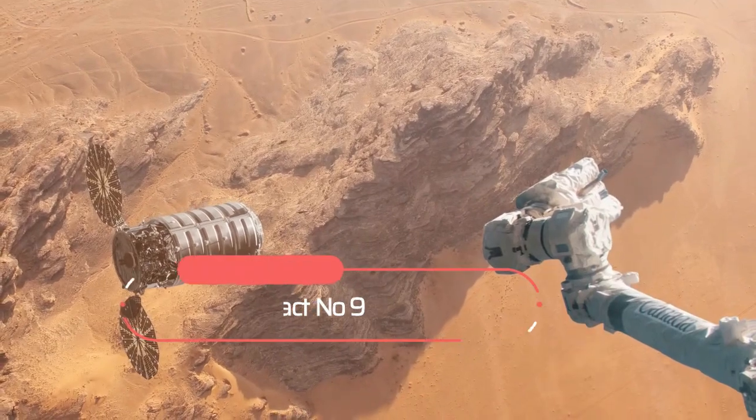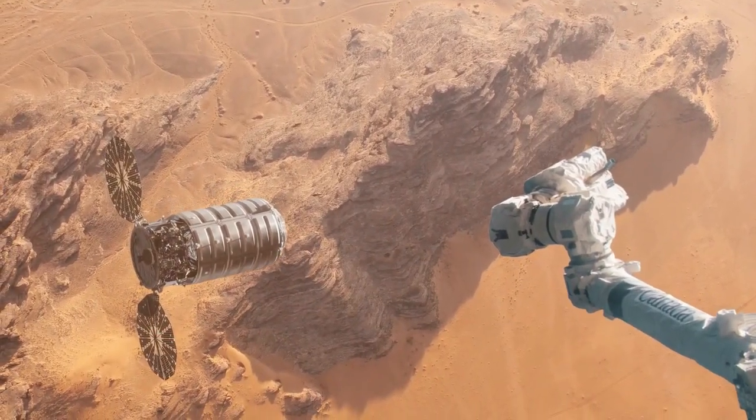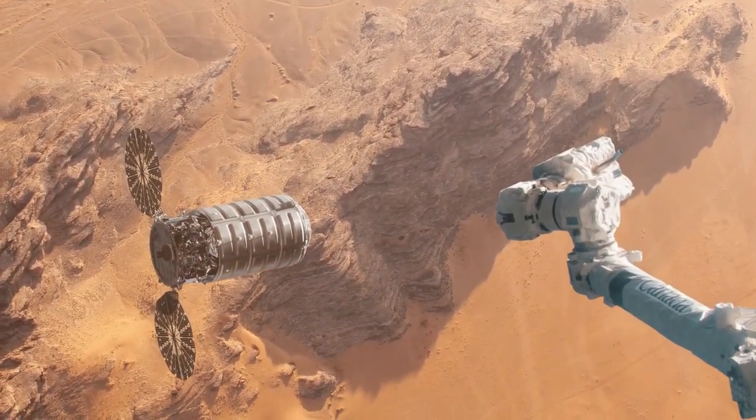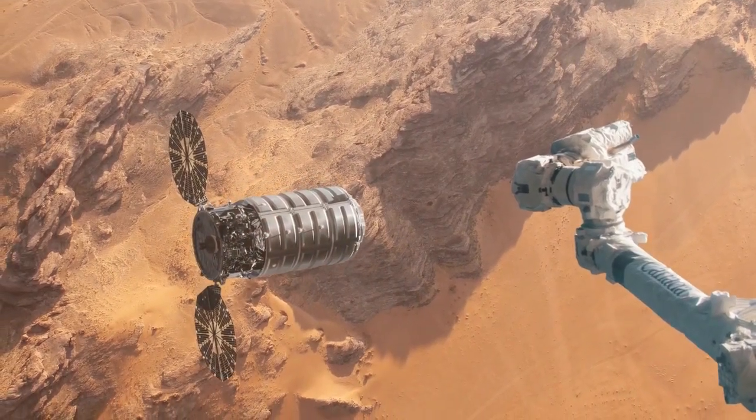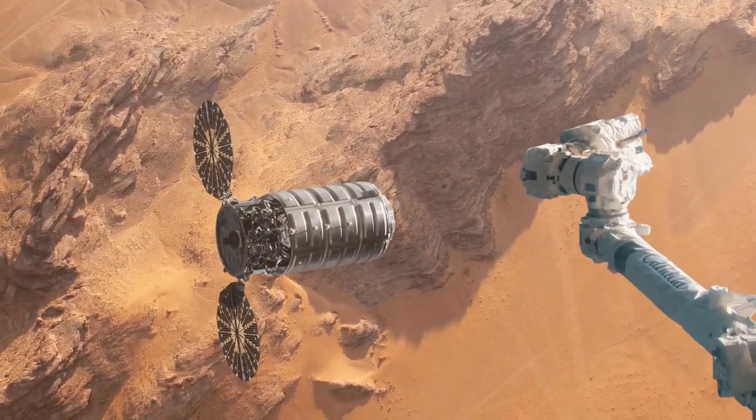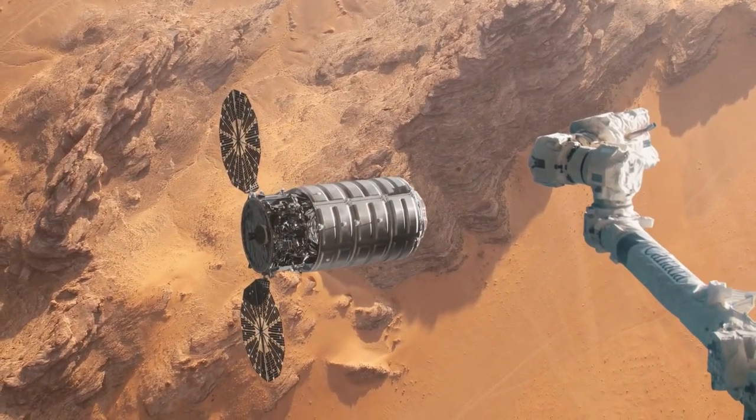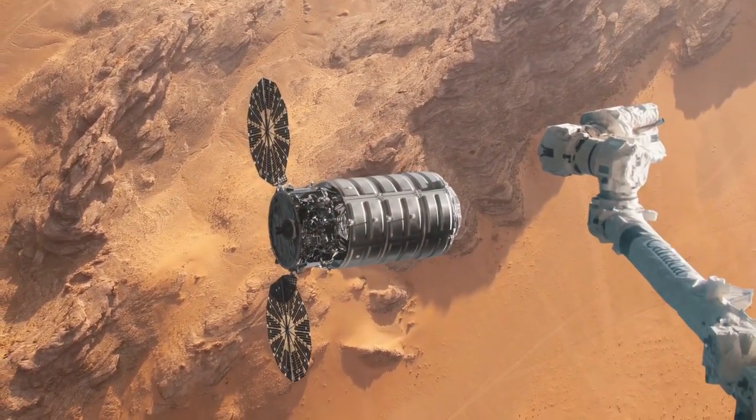Fact number nine, the tallest mountain in the solar system is on Mars. Olympus Mons is a shield volcano on Mars that stands 22 kilometers tall and has a diameter of 600 kilometers. To put it into perspective, that's three times taller than Mount Everest.